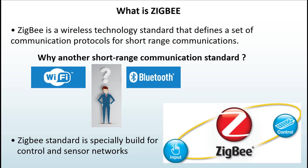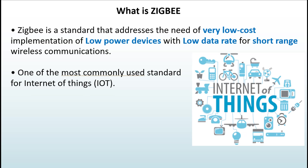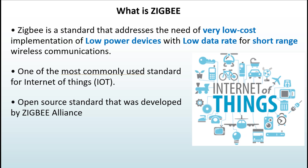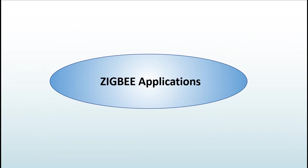In a nutshell, Zigbee is a standard that addresses the need for very low cost implementation of low power devices with low data rate for short-range communications. Zigbee is one of the most commonly used standards for the Internet of Things. It is also an open source standard developed by the Zigbee Alliance, an organization created in 2002 that consists of hundreds of companies today.